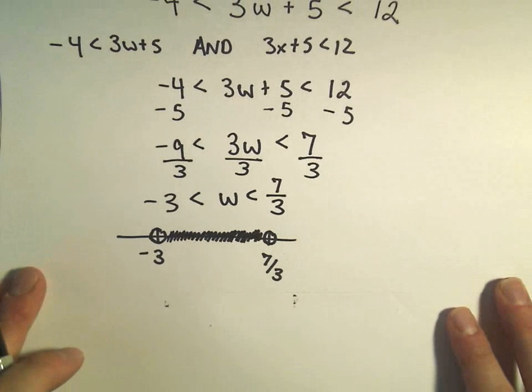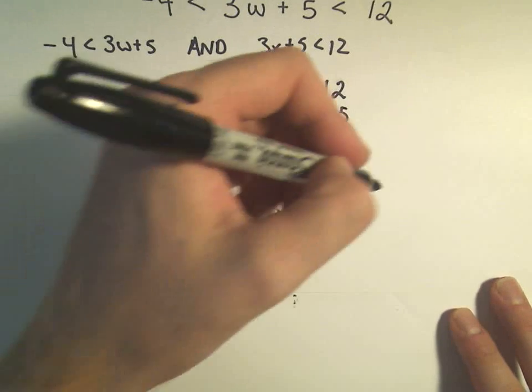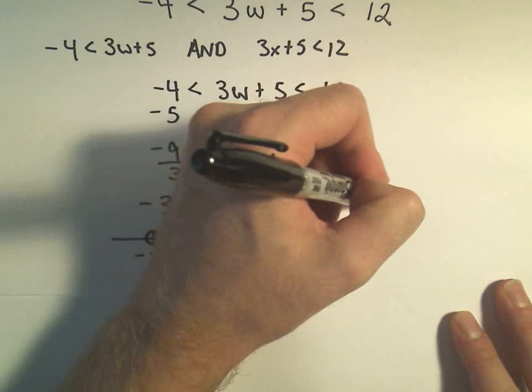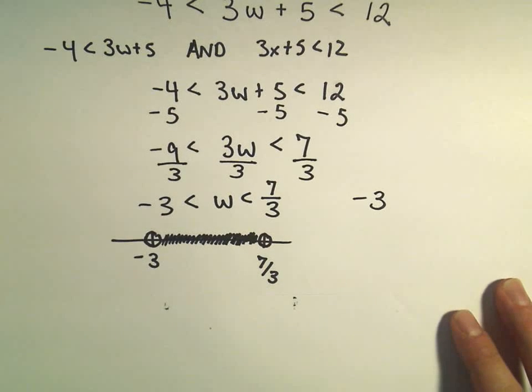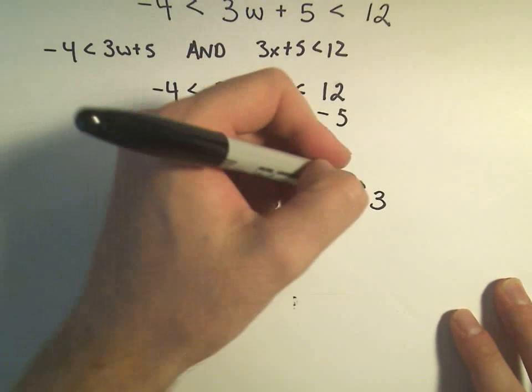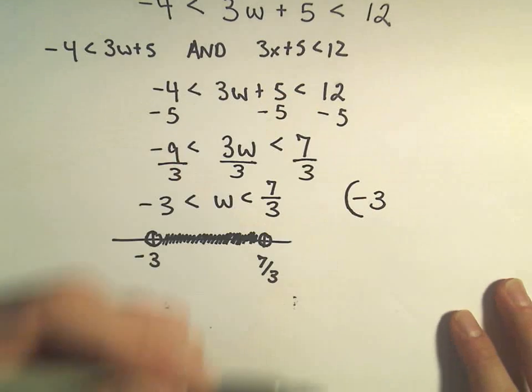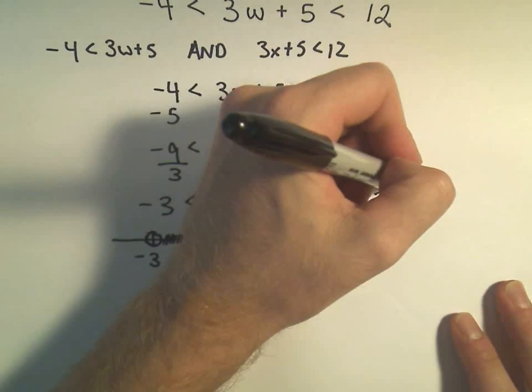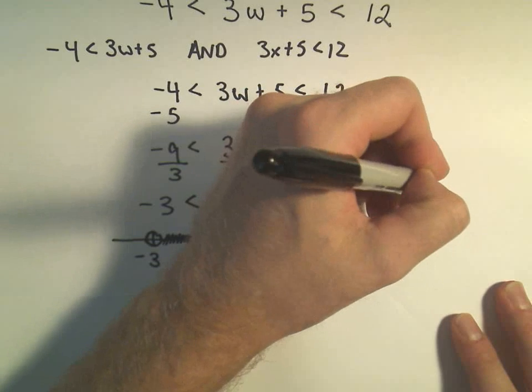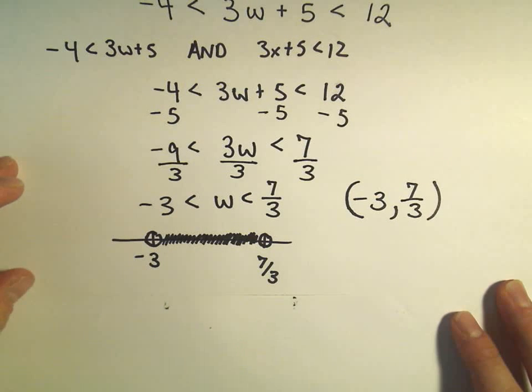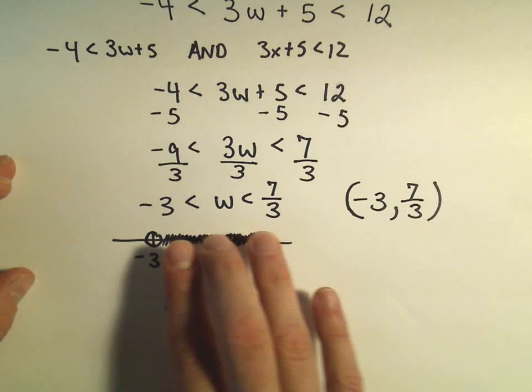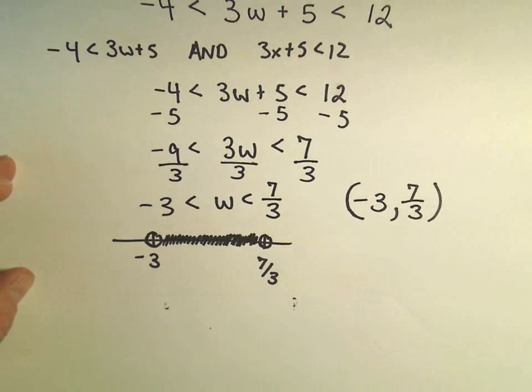So to write our solution in interval notation. If you think about the left number, that's going to be the number that goes on the left with interval notation. Since it's less than, we don't include it, so we just use our parentheses. We put a comma, and then we go up to 7 thirds. And again, we use a parentheses because we don't include it. So this is the interval notation to describe this set of solutions.